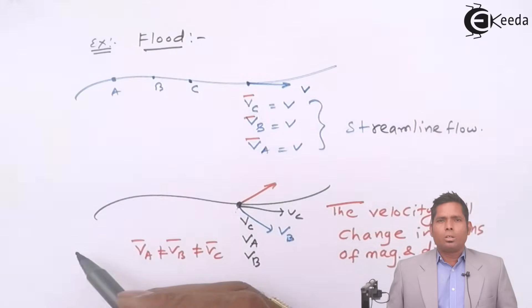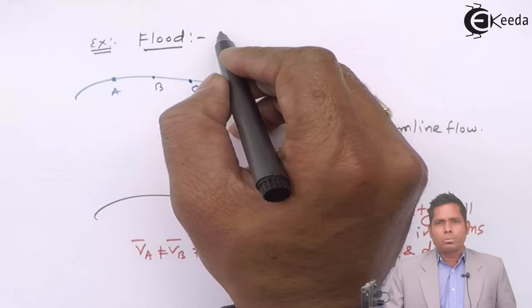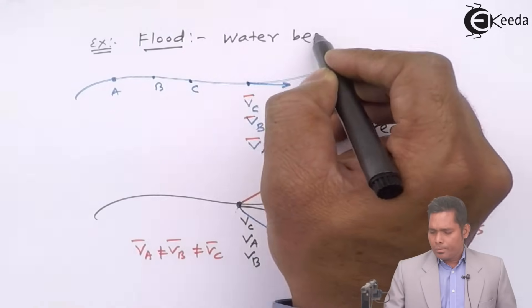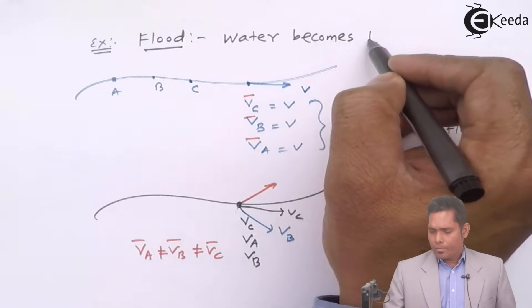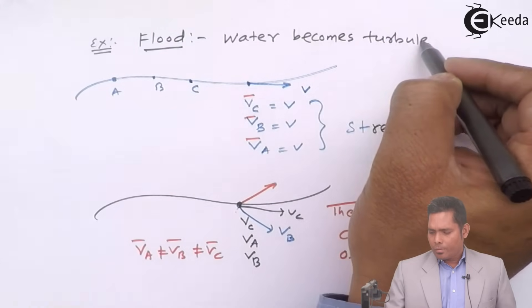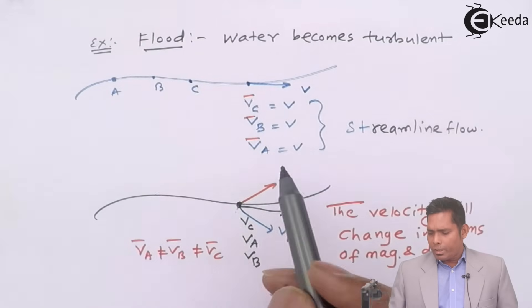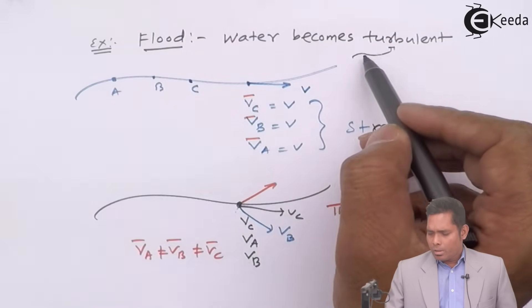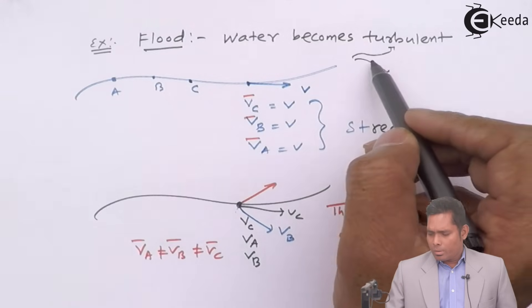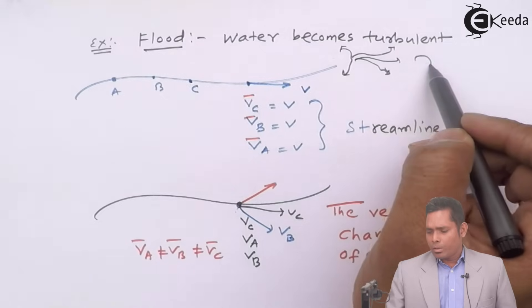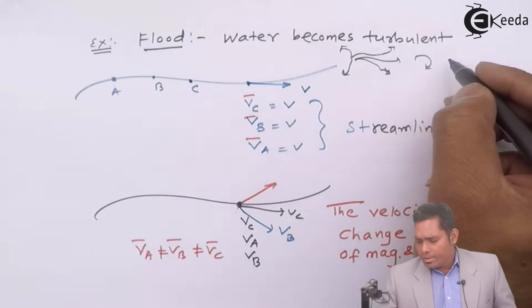The water in the river becomes turbulent and the liquid will move in any direction, any random direction.